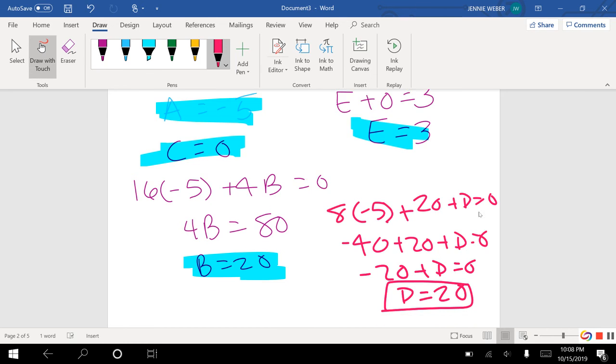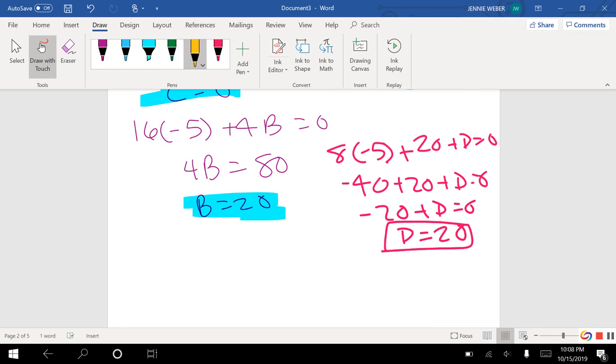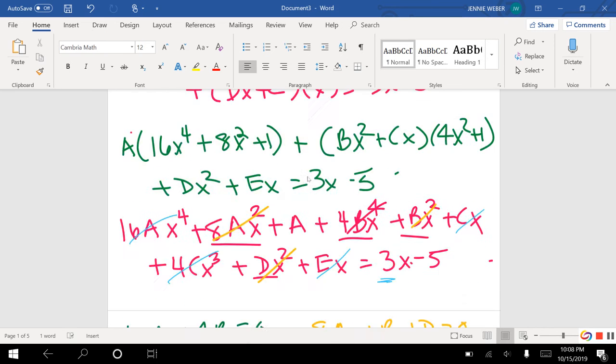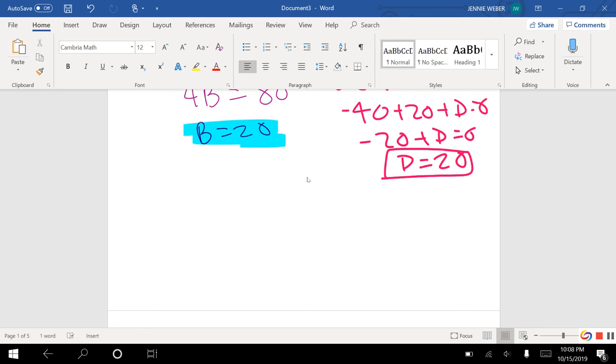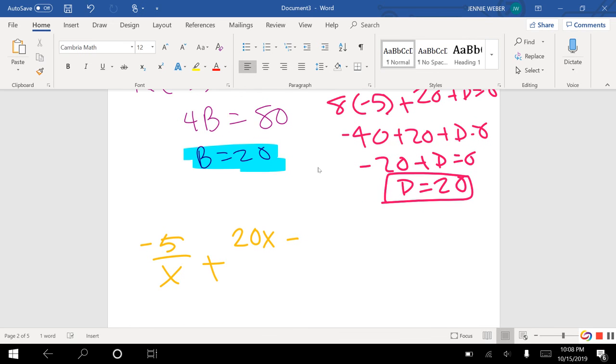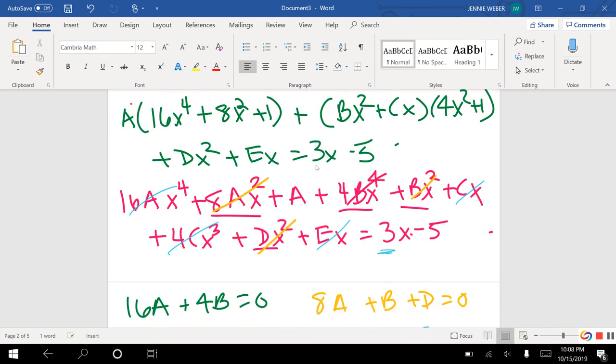So this means my equation, so I'm going to go back up to my equation, and so A over x. So negative 5 over x plus, then I had Bx, so 20x plus a C, so plus 0.